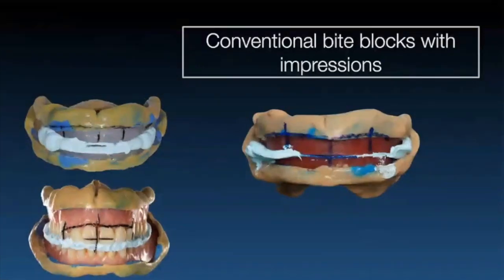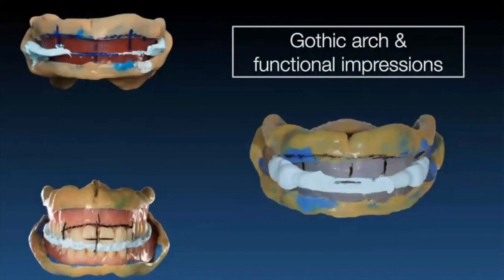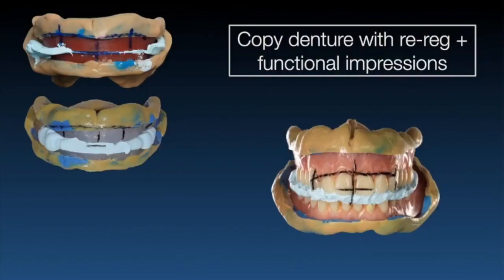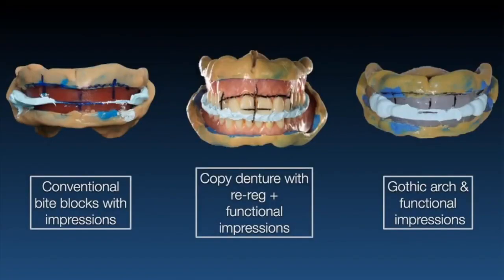These are your workflow options. The middle left shows gothic arch tracing. You can use bite blocks if you prefer — with hard bases, since soft bases can't take a good impression. Or use the gothic arch tracer. I think the most popular application will be copy dentures: the patient comes in, you do impressions inside the existing denture with a re-reg, scan it, and use the information present in the existing denture to make alterations.